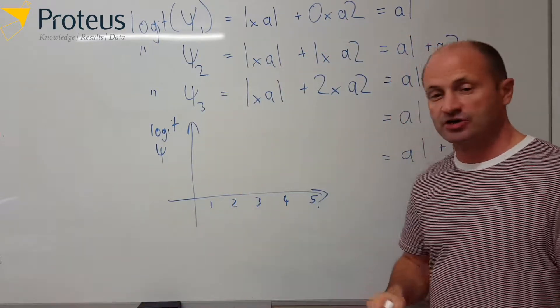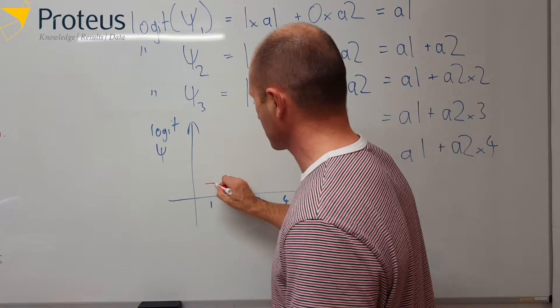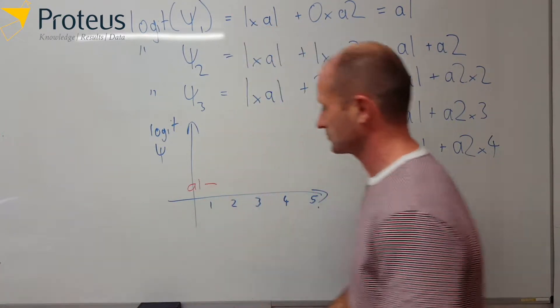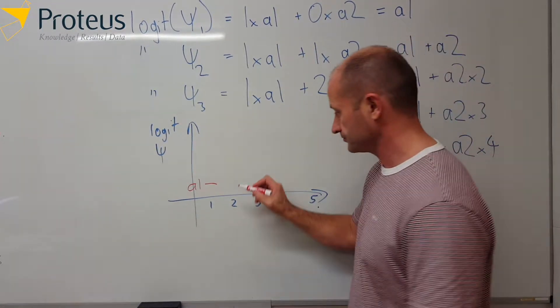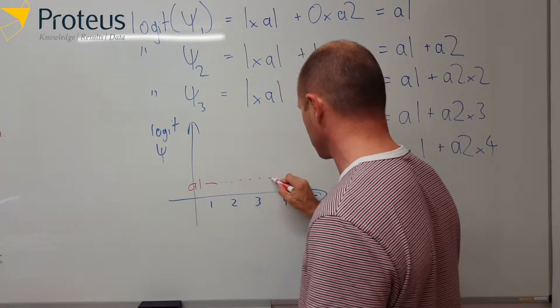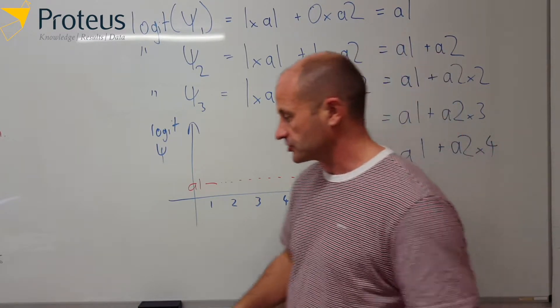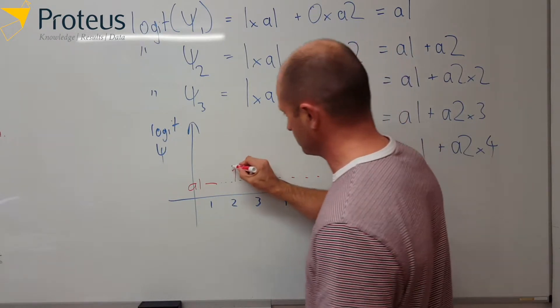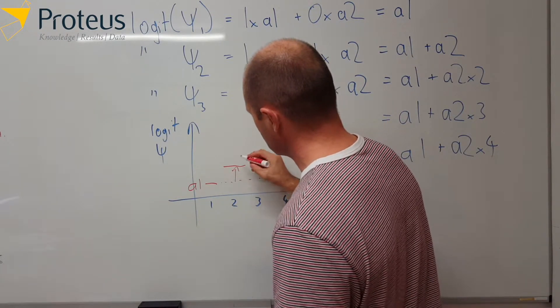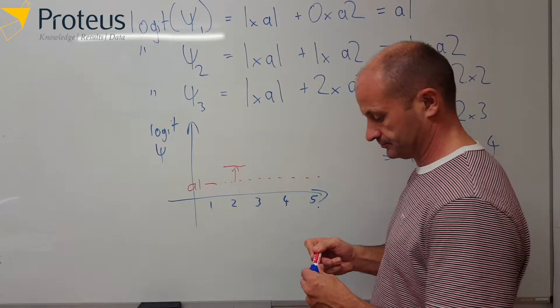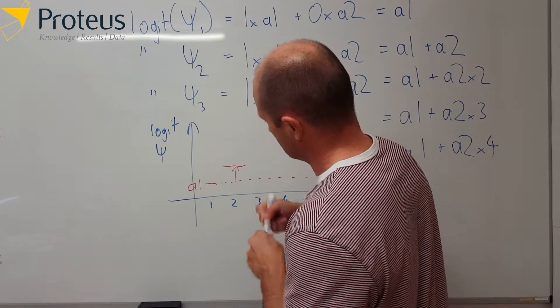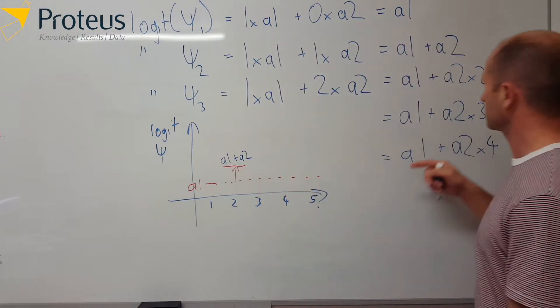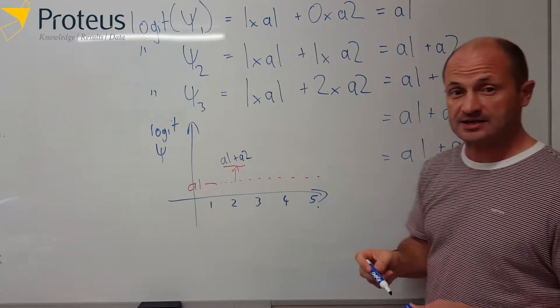Okay, so at time one we have some amount which is a1. And at time two, that's going to go right across there, and then at time two it's a1 plus some amount a2. Okay, so that point there, that line, that is a1 plus a2, which is what we've got from our equation.